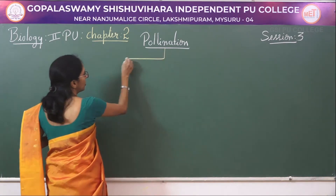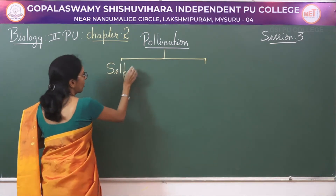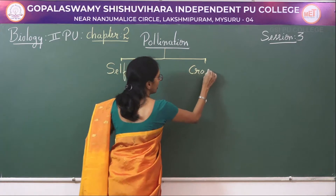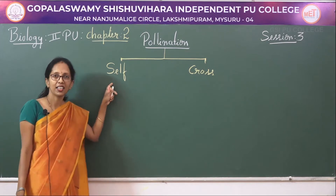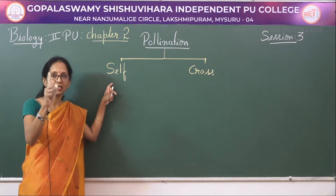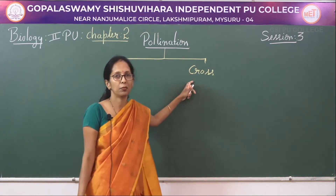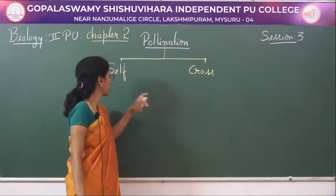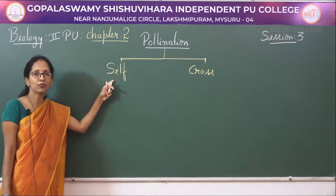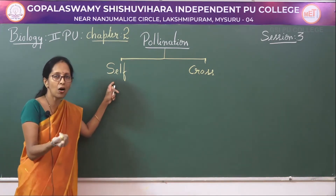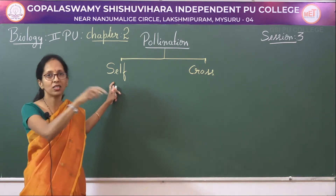There are two types of pollination. One is said to be self-pollination and the second is cross-pollination. As the name indicates, self-pollination includes only one plant, while cross-pollination includes two plants. Self-pollination is the transfer of pollen grains from the anther to the stigma of the same flower or another flower of the same plant.